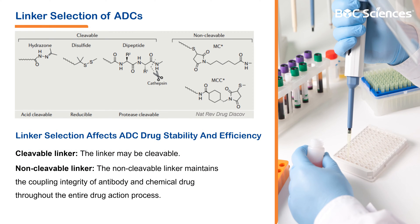The chemical linker is a critical component of the ADC that joins the MAB and cytotoxic payload, facilitating ADC stability in circulation until the ADC reaches the target cell and releases the payload. There are two classes of linkers: cleavable and non-cleavable. Cleavable linkers can be cleaved in response to environmental factors such as the acidic environment of the endosome and lysosome, or in the presence of proteases or reducing agents such as cathepsin B or glutathione. Non-cleavable linkers are resistant to proteolytic degradation and rely on full antibody degradation to release the attached linker-payload complex, requiring the payload to remain active while linker-bound.